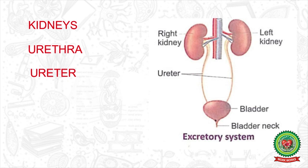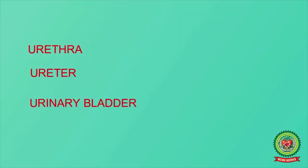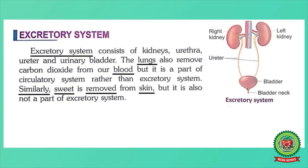Let's see these organs in the diagram given in your book. The two bean-shaped structures are the kidneys. From the kidneys, tube-like structures come out — they are known as ureters. These ureters enter a bladder, which is the urinary bladder. At the base of the urinary bladder, there is the urethra.